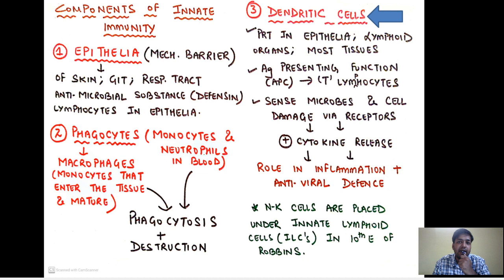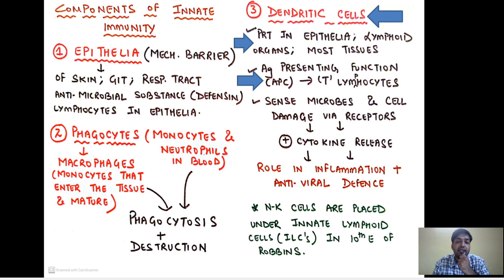Thirdly, we have dendritic cells — the professional antigen-presenting cells, comparable to local police constables who take a criminal to the main officer. They are present at sites of entry such as the epithelium and lymphoid organs, and in most tissues. Their main function is antigen presentation to T lymphocytes; they are also called APCs. They sense microbes and cell damage via surface receptors and in response release certain cytokines, giving them a role in inflammation as well as antiviral defense.